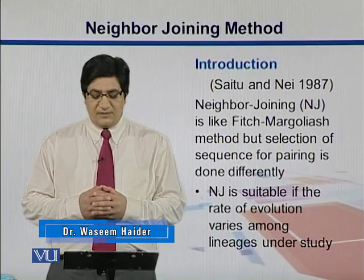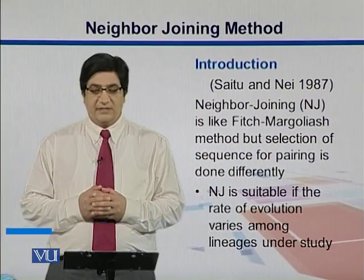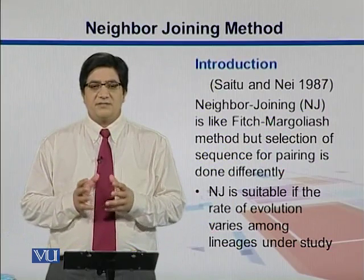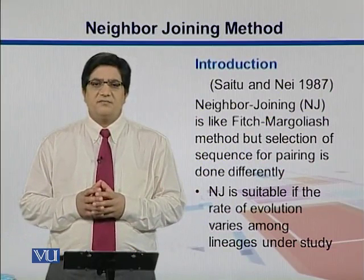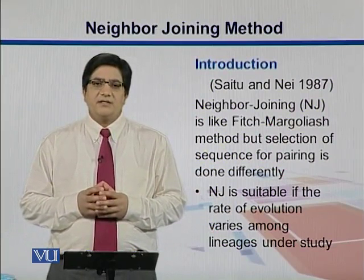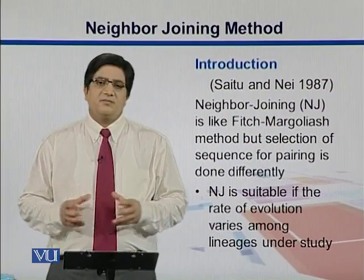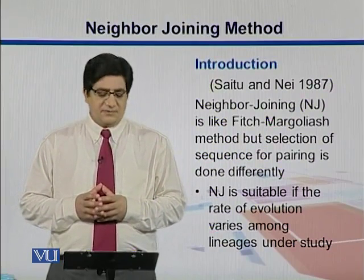This is suitable if the rate of evolution varies among lineages under study. NJ takes the sequences and tries to do some kind of clustering with those sequences, and then puts them together in the shape of an integrated tree.